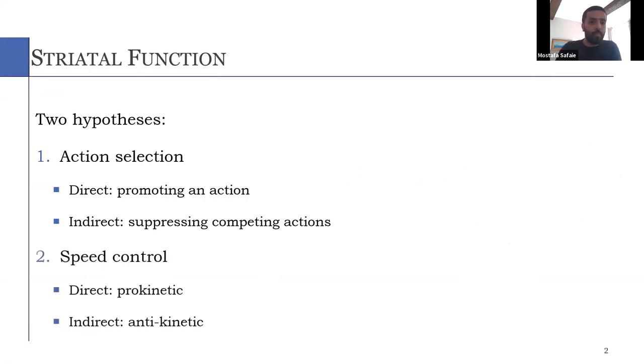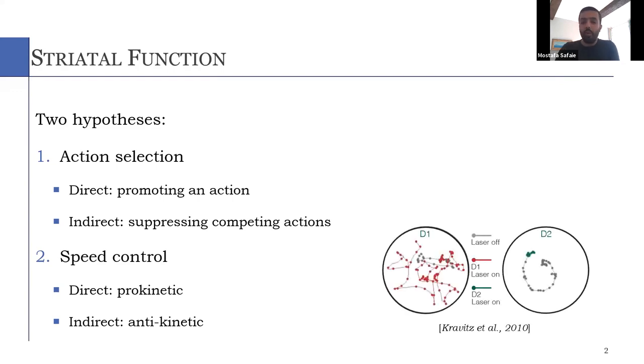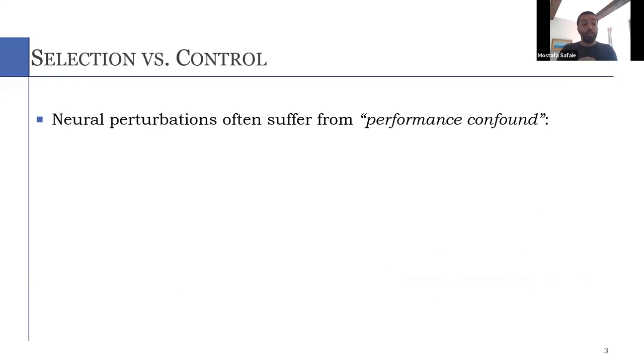An alternative idea is that direct and indirect pathways bidirectionally control the speed of movement. For instance, in this example on the left panel, we can see that direct pathway stimulation increases locomotion while indirect pathway stimulation decreases motor activity.